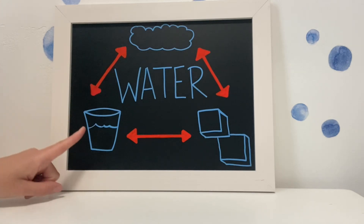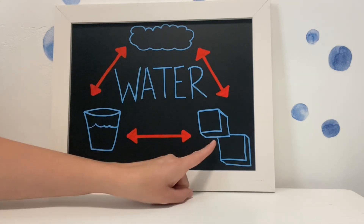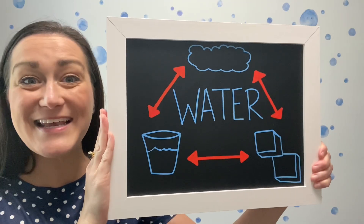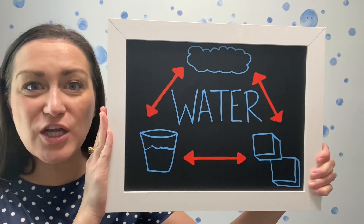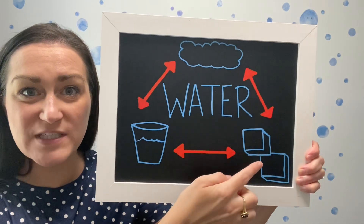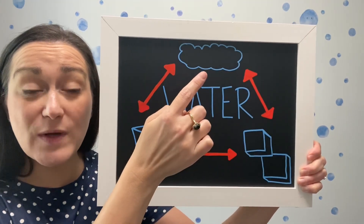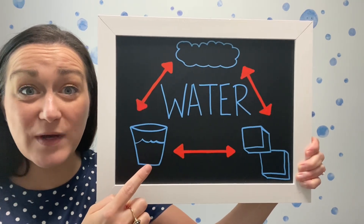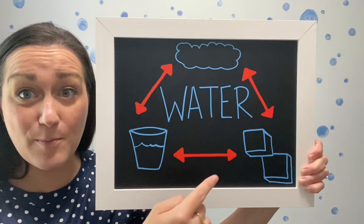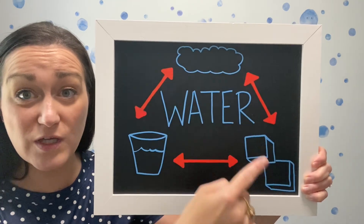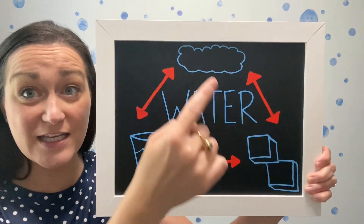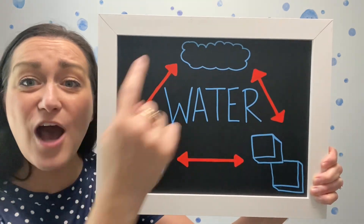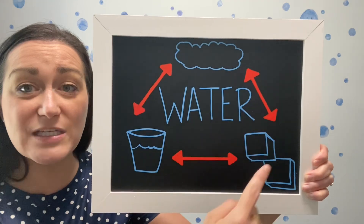So we have three states: we have the liquid, the solid, and the gas. Now, how do you think we go from a liquid to a solid, or from a solid to a gas, or even from a gas to a liquid? Notice how these arrows go in both directions — so you can go from a gas to a solid, a gas to a liquid, a liquid to a gas, or a solid to a gas. How do you think we change to the different states?